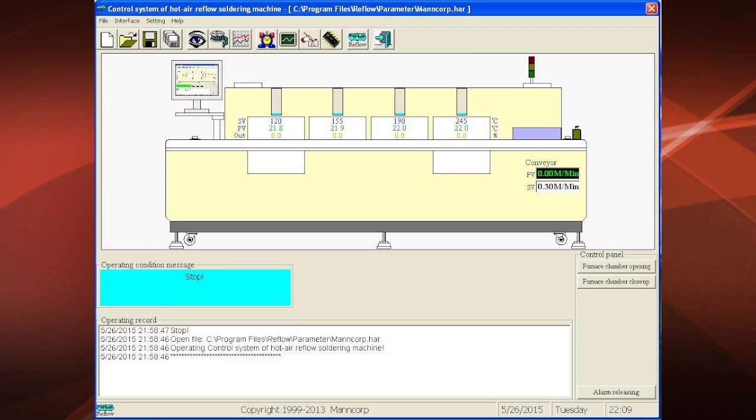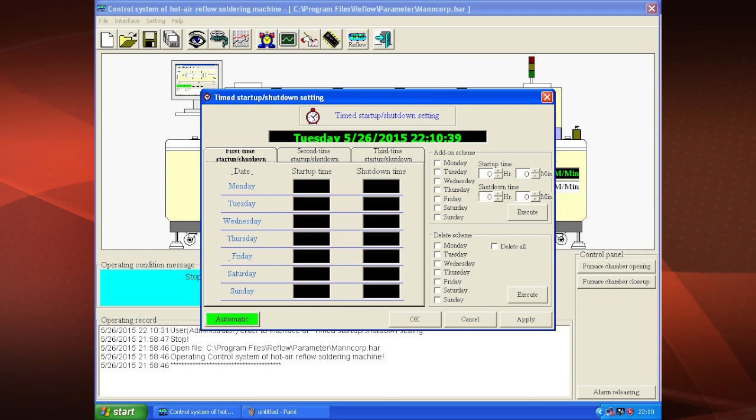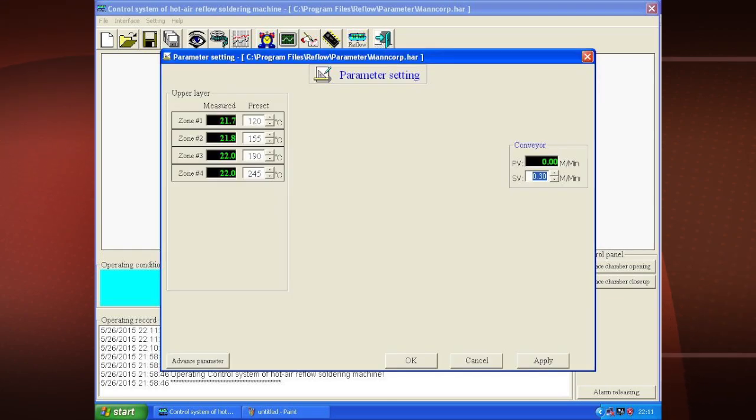With easy to use software, the oven has auto startup and shutdown times, powered hood, programmable belt speed, and many more features.